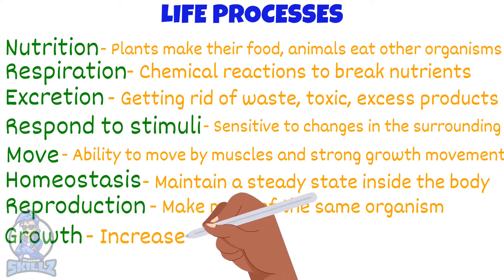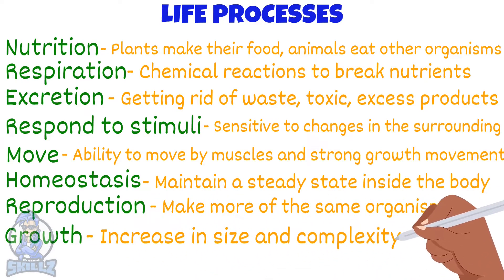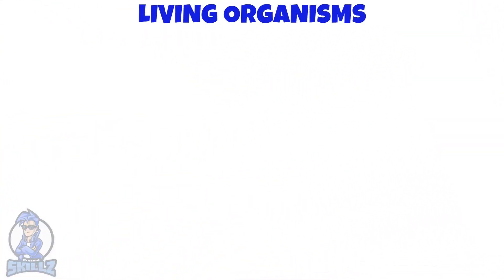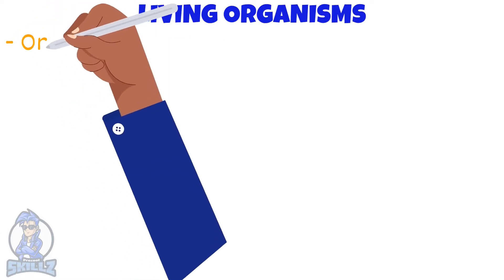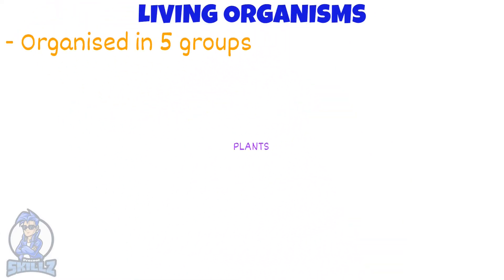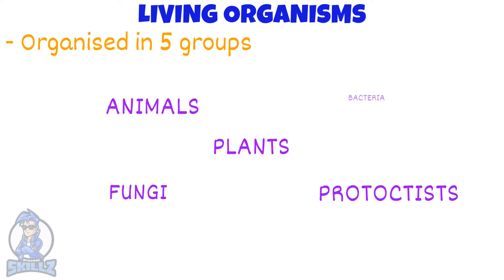Growth is a permanently increase in size and complexity. There are more than 10 million species on earth today. To make things easier, biologists classify organisms into 5 groups: plants, animals, fungi, protists and bacteria.